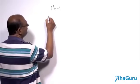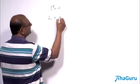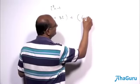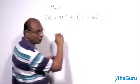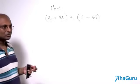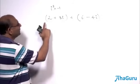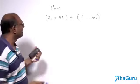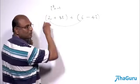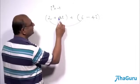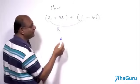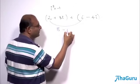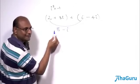Let us take one simple example: 2 plus 3i, plus 6 minus 4i. These are two complex numbers and I want to add them. When I add them, the real parts will add up and the imaginary parts will separately add up. So 2 and 6 together give you 8. Then 3i plus minus 4i gives minus 1i, which we write simply as 8 minus i.